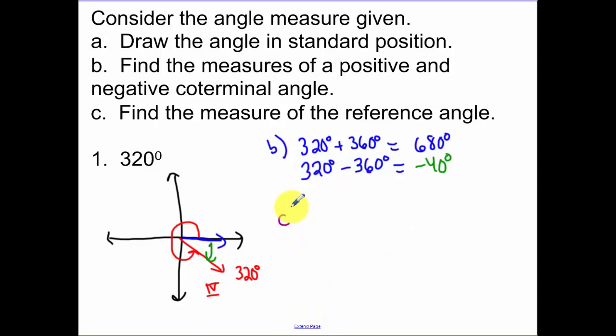Part C, reference angle. Reference angle is the angle back to the x-axis. So you look at your terminal side. What's the closest angle that's going to get me back to the x-axis? That's this angle in here. Since all the way around is 360 degrees, this side is just 320. This angle here is a positive 40 degrees. Reference angles are always positive.